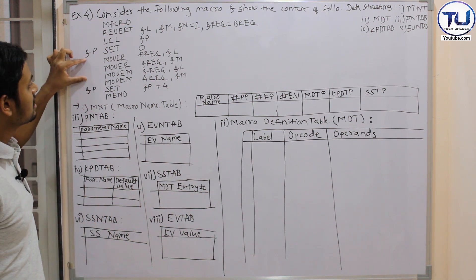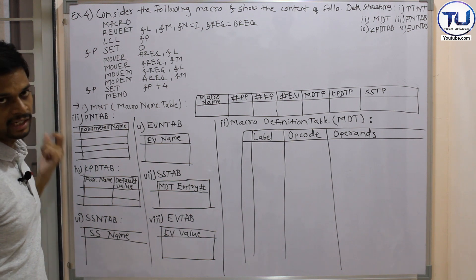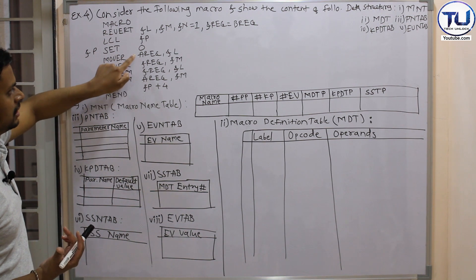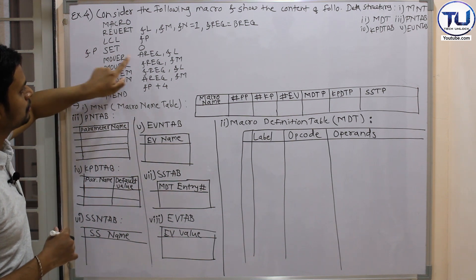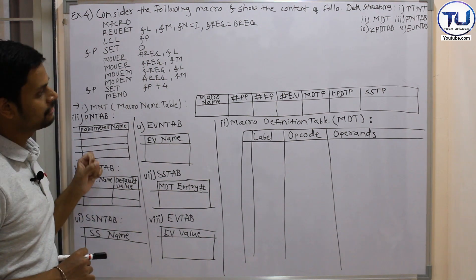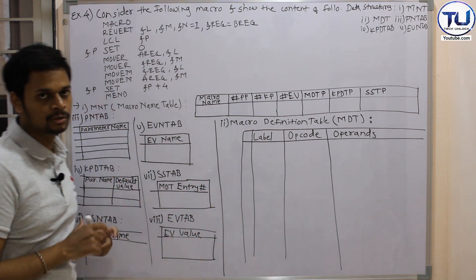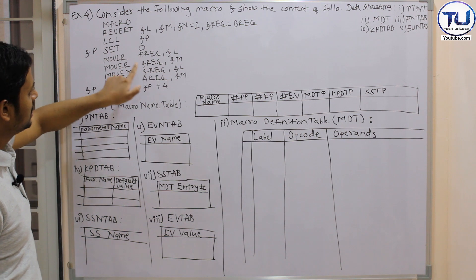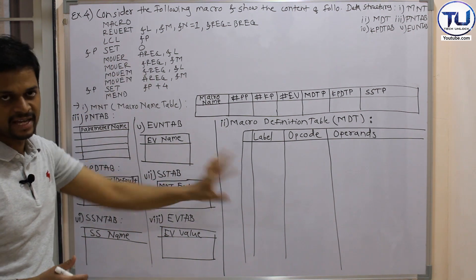Here you can see that in the body part they have given the register value directly. Previously, in the earlier examples, they would pass a formal parameter in the operand field — like '&register' — which we would then convert to parameter form P,1 or P,2 in the MDT table. But here, in the operand field, they directly pass the register value — for example, 'A register'. Because it is a direct value, not a formal parameter, we have to write it as-is.